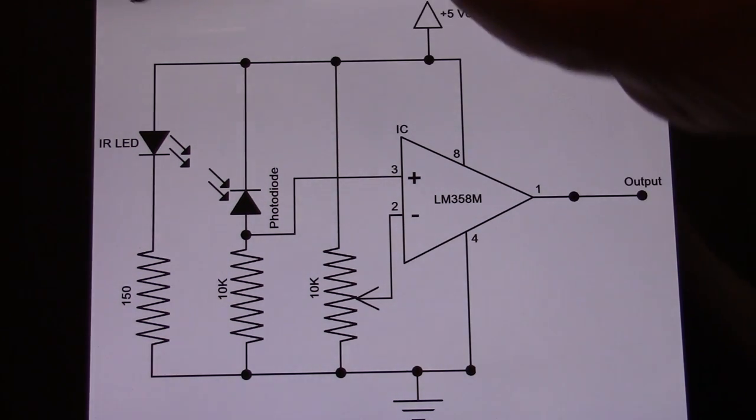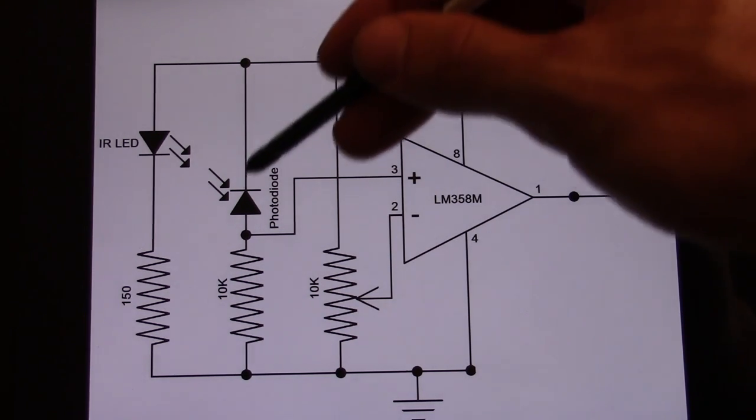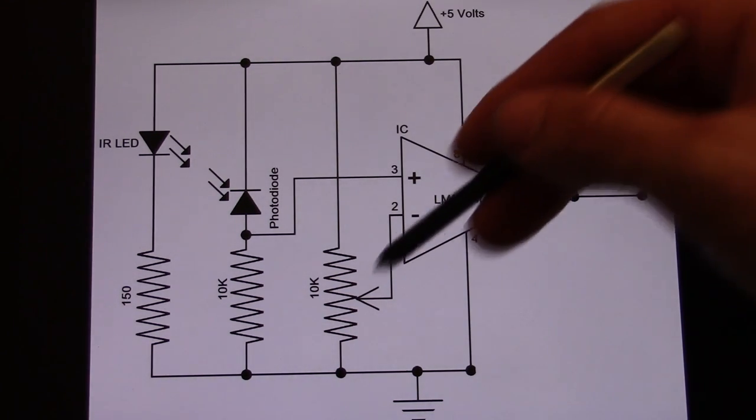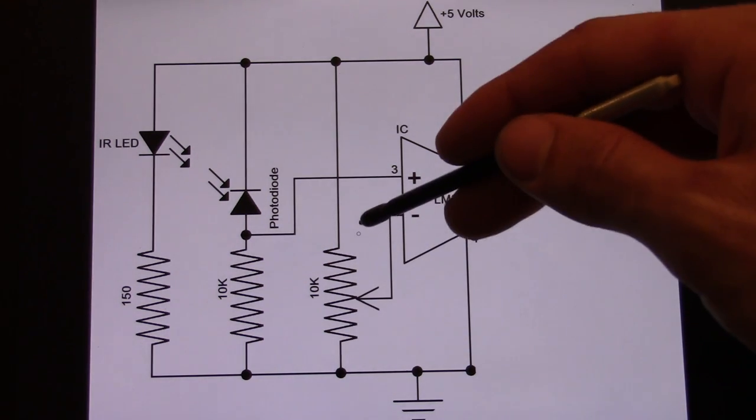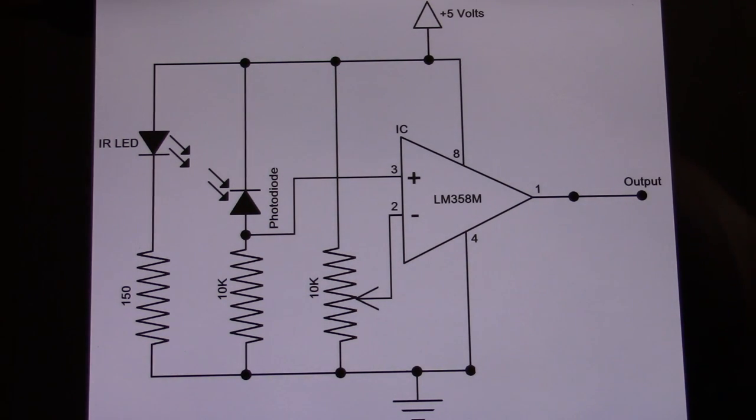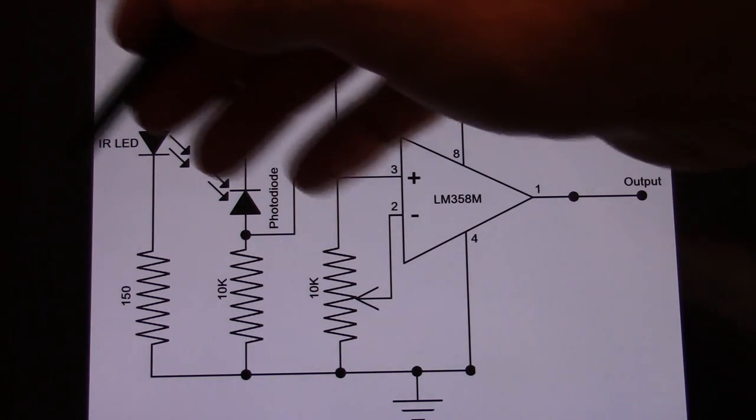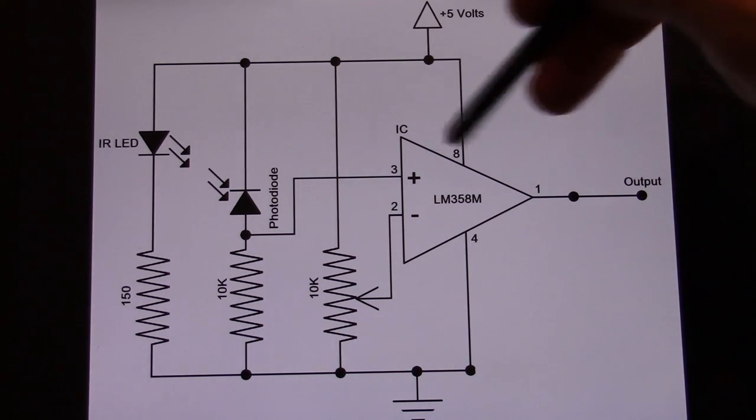In order to control how far an object has to be away from the sensors until it sends a signal to this chip, we have a variable resistor right here which can be tuned from zero ohms all the way up to ten thousand ohms. So we were able to control whether an object was four feet away all the way down to less than a quarter of an inch away before it sent the signal.